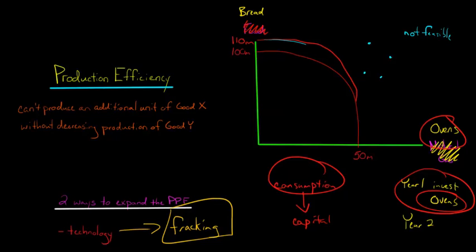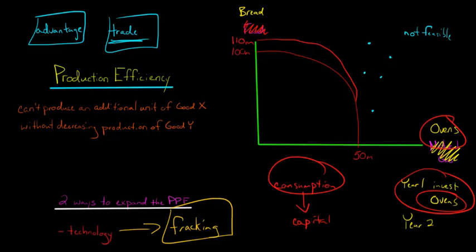But there's a third thing that would not expand the PPF, but it would actually allow us to consume at a point outside the PPF, and that's called specialization in trade. So if we specialize in producing goods where we have a comparative advantage, if we have a comparative advantage in producing bread or whatever, if we specialize in goods where we have a comparative advantage and then trade with other countries, then we can actually get to a point, one of these points that says it's not feasible. We can actually consume potentially at one of those points by specializing in a good in which we have comparative advantage and trading with other countries. And we'll talk about that more in the videos to come.